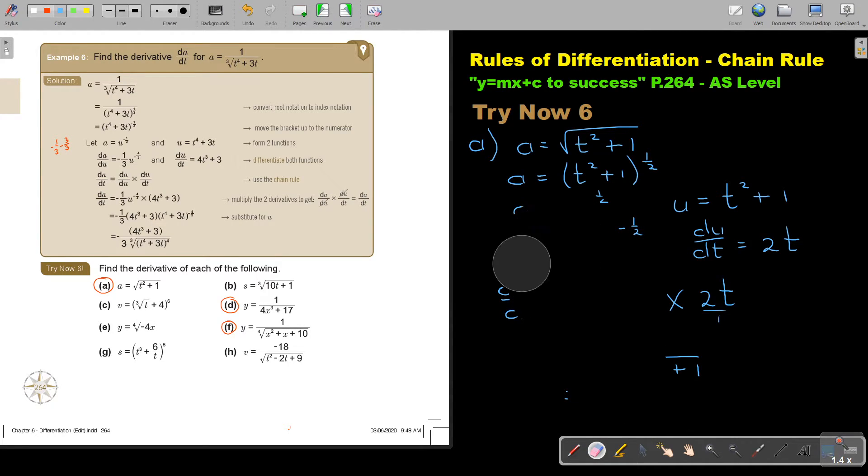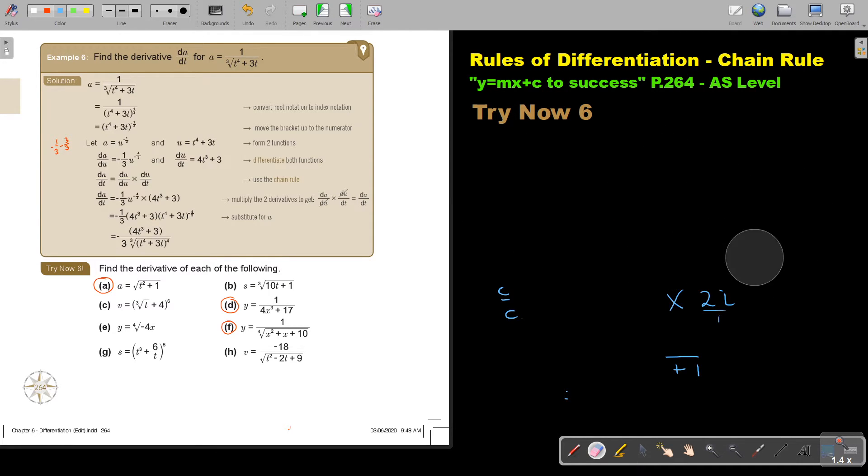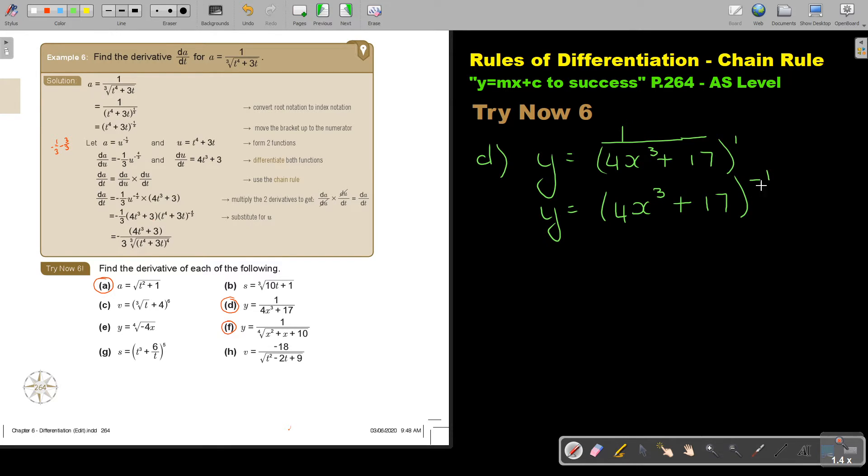Let's move on to number D. Number D, it's a Y, more familiar. 1 over 4. Remember, the variables cannot be in the denominator. So in this case, I'm going to put it in brackets, put 1, and now bring it up to the numerator.